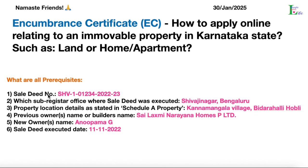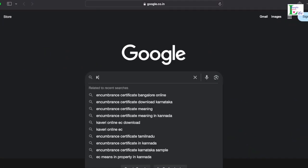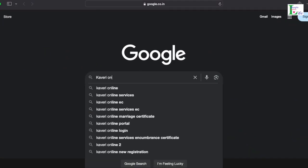Schedule A property also contains the previous owner's name or builder name, and the new owner's name. In our example, the sale deed number and sub-registrar office is Shivaji Nagar, Bengaluru. The property location is Kannamangala village in Bidarahalli. The previous owner is Sai Lakshmi Narayana Homes Private Limited, the new owner is Anupama G, and the sale deed was executed on 11/11/2022.